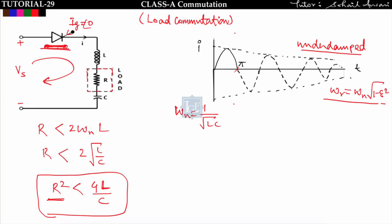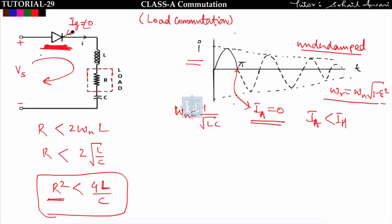In the current waveform you can see that the current is positive from 0 to π, and after π the current goes negative. At ωt = π, the anode current is zero. The moment the anode current falls below the holding current, the thyristor turns off. After π, the current is negative, so the thyristor won't allow negative current — it goes into the off state. This is how the SCR is turned off using commutating elements L and C.